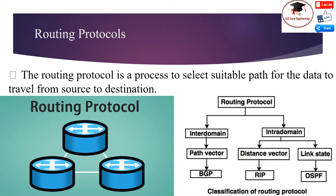Data sent by the sensor node in a wireless sensor network is typically forwarded to the base station that connects the sensor network with other networks, where data is collected, analyzed, and action is taken. In very small sensor networks where the base station and sensor nodes are so close that they can communicate directly, this is called single-hop communication.